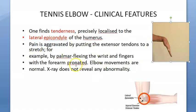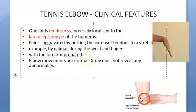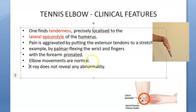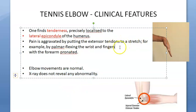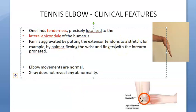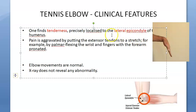Importantly, elbow movements are not restricted — they are normal. The X-ray does not reveal any abnormality because there is no fracture involved; this is a soft tissue injury and X-ray does not show soft tissue changes.